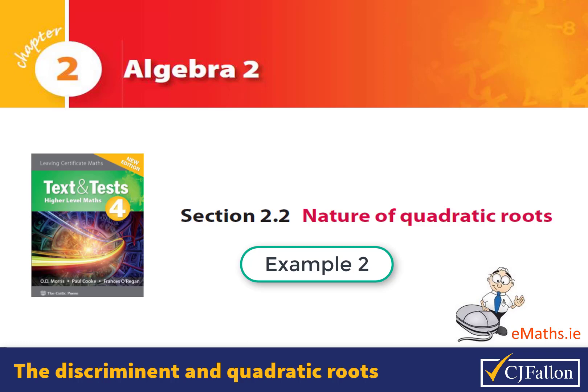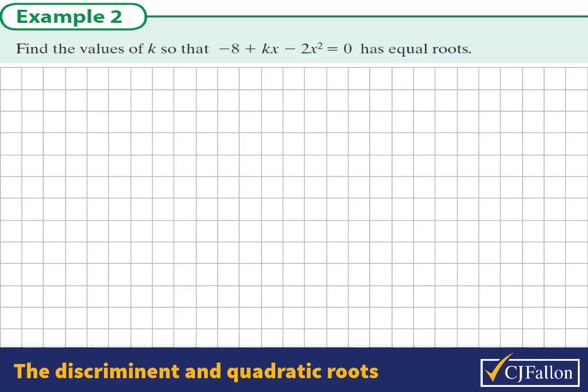The nature of quadratic roots, example 2. Find the values of k such that -8 + kx - 2x² = 0 has equal roots.